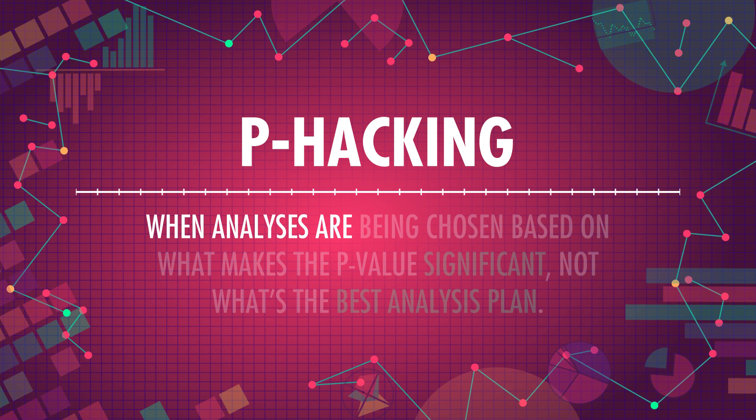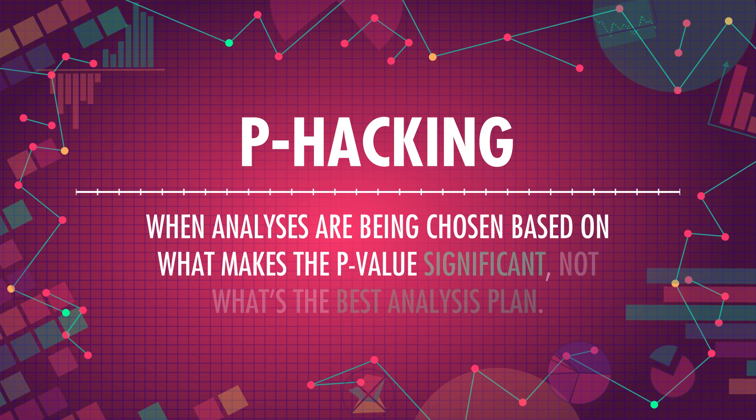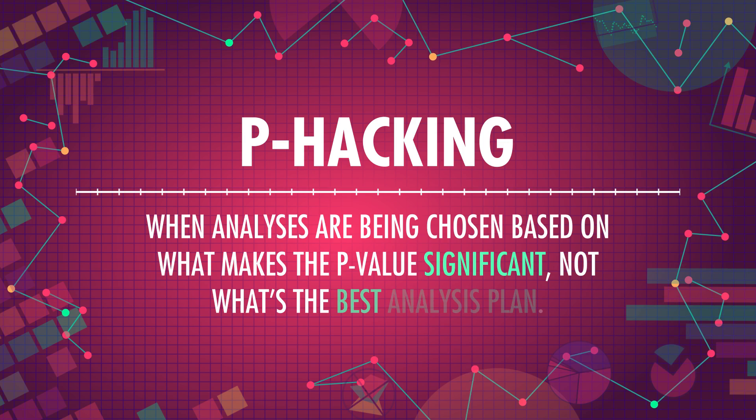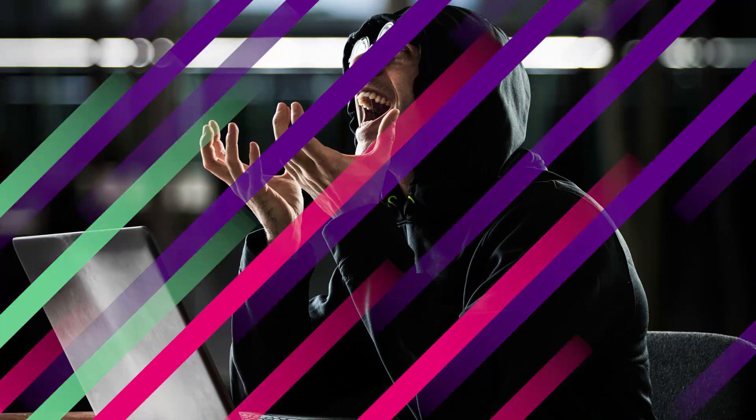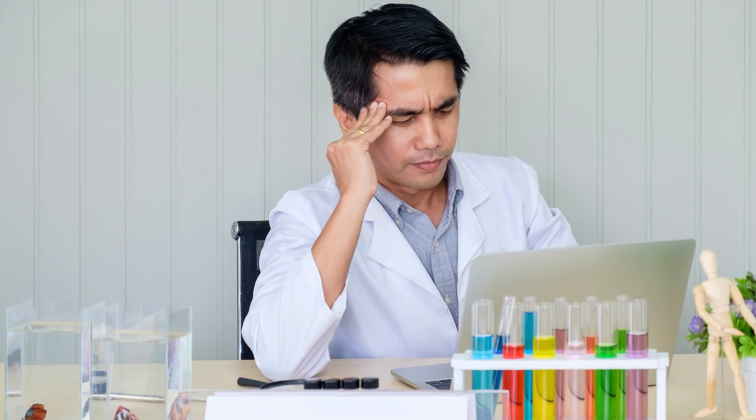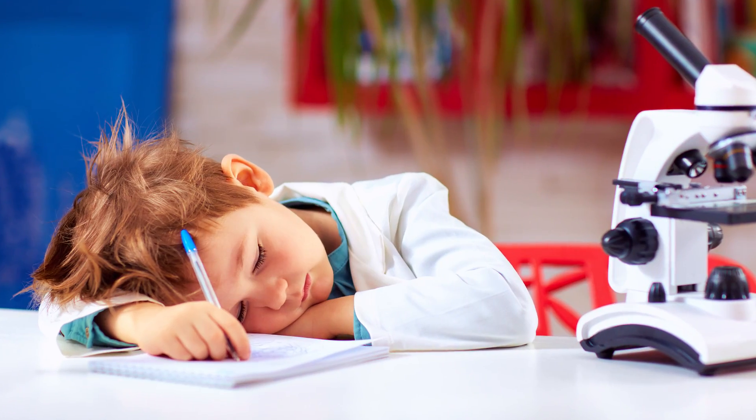And in this quest to achieve positive results, sometimes things go wrong. P-hacking is when analyses are being chosen based on what makes the p-value significant, not what's the best analysis plan. Statistical tests that look normal on the surface may have been p-hacked, and we should be careful when consuming or doing research that we're not misled by p-hacked analyses. P-hacking isn't always malicious — it could come from a gap in a researcher's statistical knowledge, or a well-intentioned belief in a specific scientific theory, or just an honest mistake. Regardless of what's behind p-hacking, it's a problem.